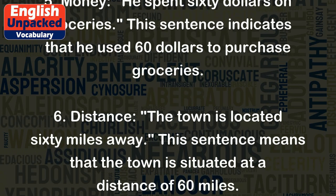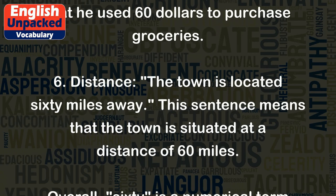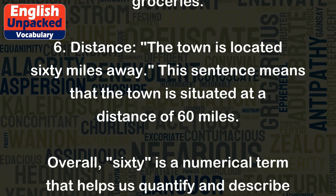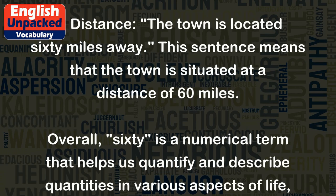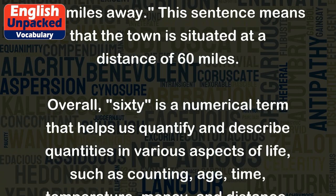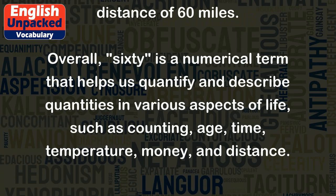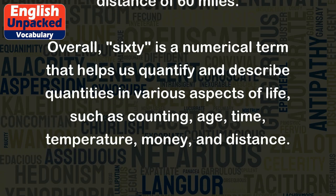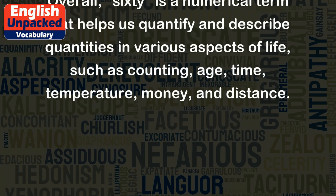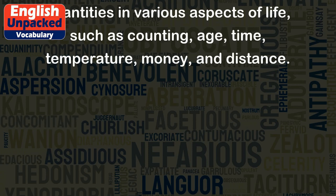6. Distance: the town is located 60 miles away — this sentence means that the town is situated at a distance of 60 miles. Overall, 60 is a numerical term that helps us quantify and describe quantities in various aspects of life, such as counting, age, time, temperature, money, and distance.